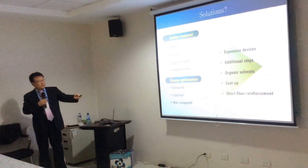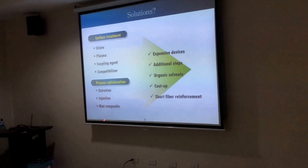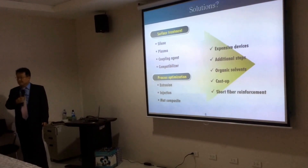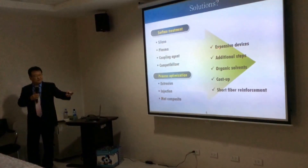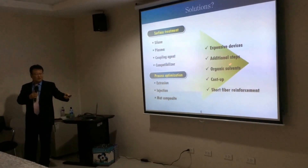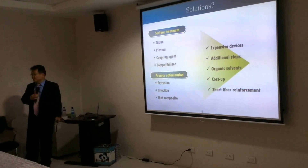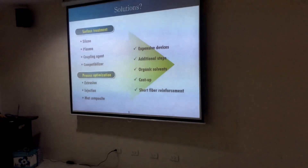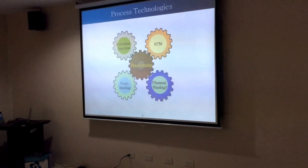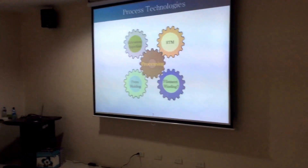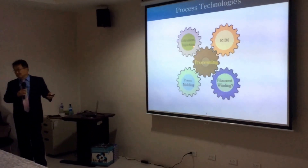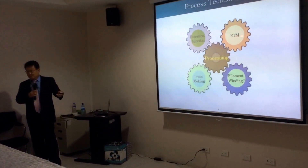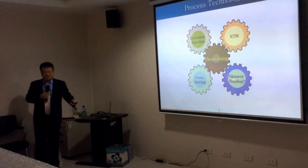For surface treatment we can use plasma, coupling agents, or compatibilizers. In terms of process technologies, we have extrusion, injection molding, press molding, filament winding, and RTM — resin transfer molding, which was discussed this morning and this afternoon.